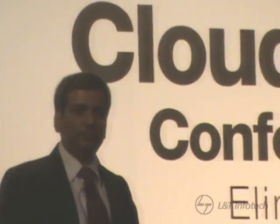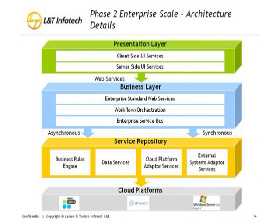At a high level the architecture has three standard layers: the presentation layer, the business layer, and the source layer which we call the service repository. However, each of these layers is further nuanced by adding sub-layers and separation of concerns within them.